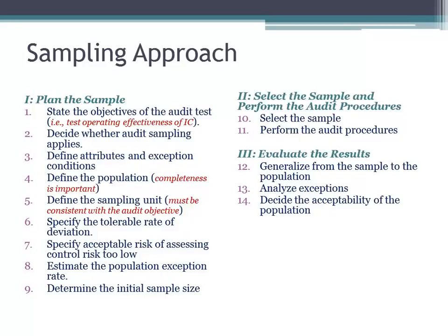Define the population — this is where completeness is extremely important. If you're looking at sales, the population would be all sales recorded in the sales journal. If you're looking at cash disbursements, it would be all disbursements recorded in the cash disbursements journal. You want to reconcile that you have all of the transactions that occurred for sales or all of the transactions that occurred for cash disbursements.